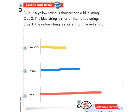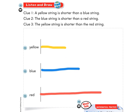Let's read clue number three to make sure all the clues add up. Number three says the yellow string is shorter than the red string. Is our yellow string shorter than our red string? Yes! So if you did it correctly, you have a yellow string that is shortest, the red string is the longest, and the blue string is between the red and yellow. Good job!